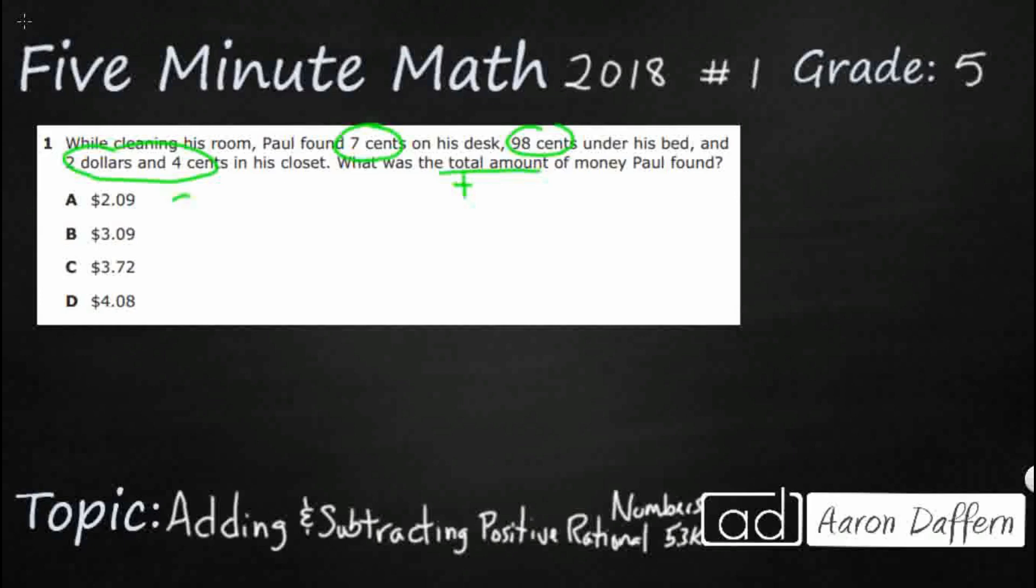So look at this right here. We've got 2 dollars and 4 cents. Those two go together. We know that 4 cents is really not a whole lot of money. So I'm just going to round it down to 2 dollars. I'm just going to call that 2 dollars.